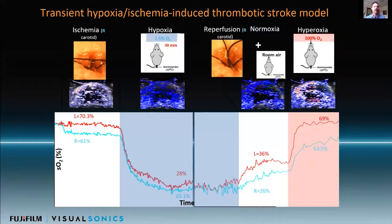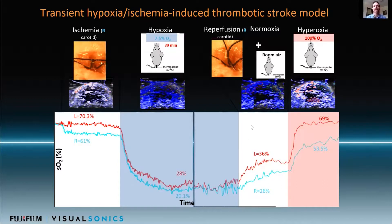This stroke model involved hypoxia-ischemia. Initially, when the common carotid was ligated, you see a drop in oxygen saturation in the right hemisphere. The animal was then put on hypoxic gas at 7.5% O2, and you see a drop in both hemispheres with much less oxygen in the blood. Then reperfusion occurs — after about half an hour, the ligation is released and the brain is perfused again. Even given hyperoxia at 100% O2, you see basically full recovery in the non-ligated hemisphere and a stroke as a result of microthrombi in the right hemisphere. The combination of hypoxia-ischemia induces this model of stroke.